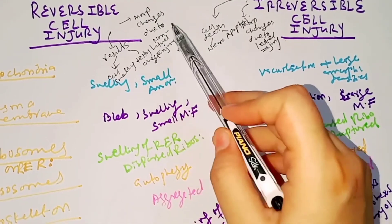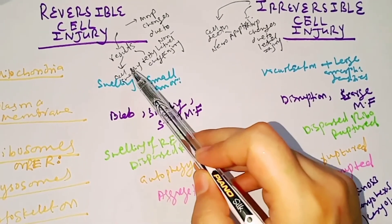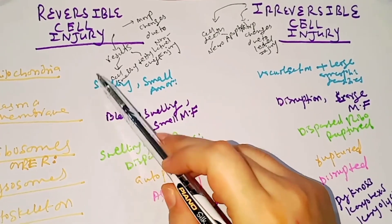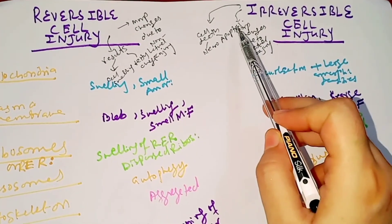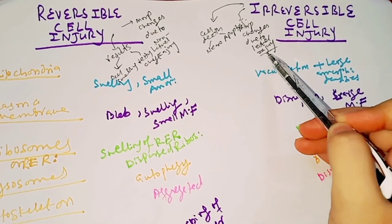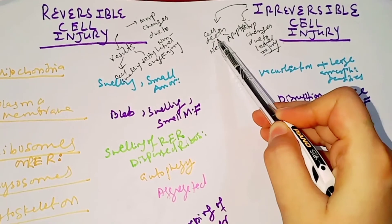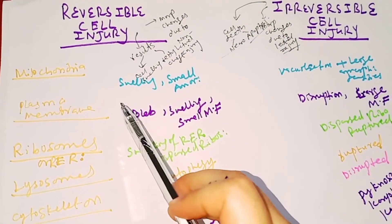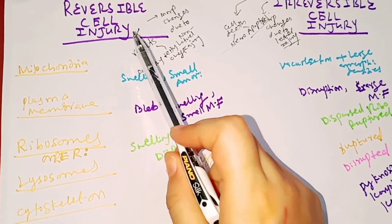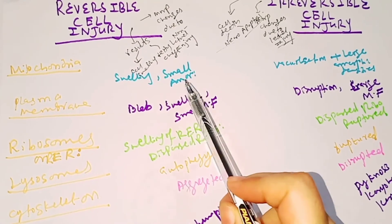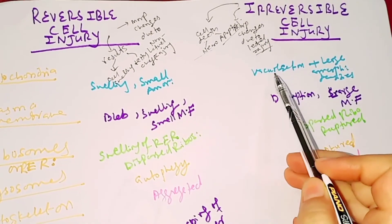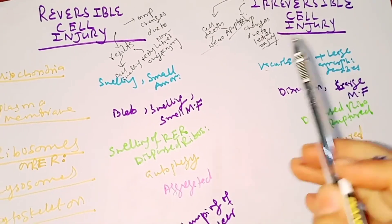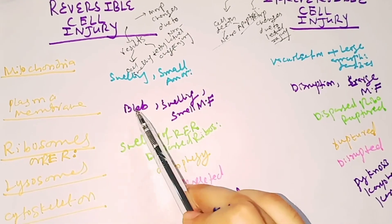Quick overview: in reversible cell injury, morphological changes are due to non-lethal injury — at most there is cellular swelling or fatty change, and it can reverse back to normal. In irreversible cell injury, morphological changes are due to lethal injury and can lead to cell death via necrosis or apoptosis. In mitochondria: reversible = swelling + small amorphous densities; irreversible = vacuolization + large amorphous densities. In plasma membrane: reversible = bleb formation.